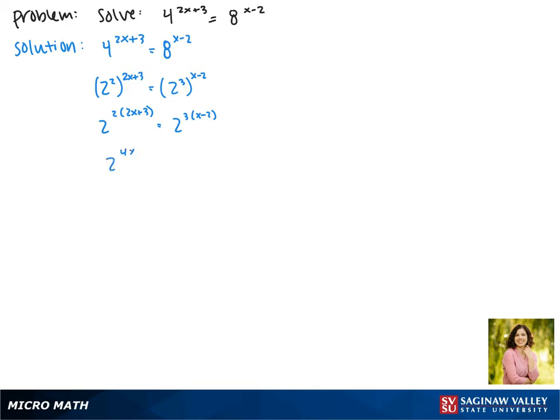This gives us 2 to the 4x plus 6 equals 2 to the 3x minus 6. For these equations to be equal, their exponents must be equal, so we can say 4x plus 6 equals 3x minus 6.